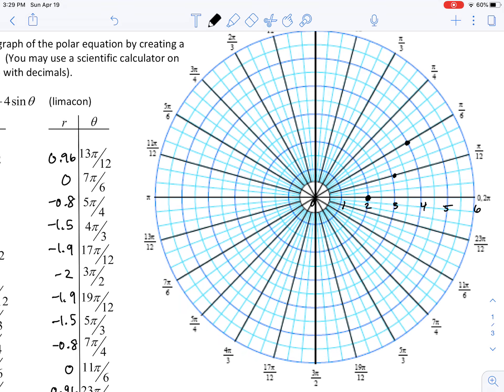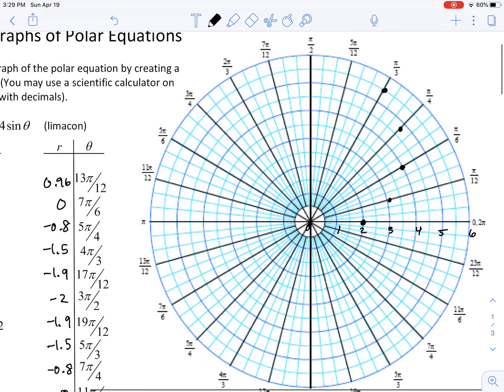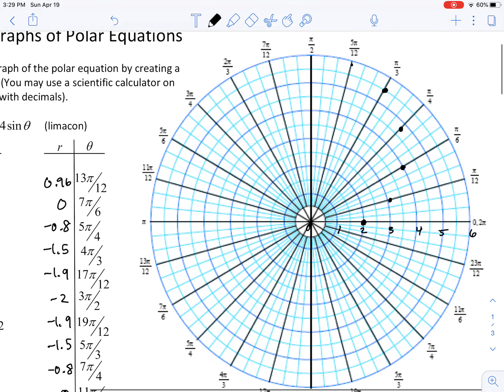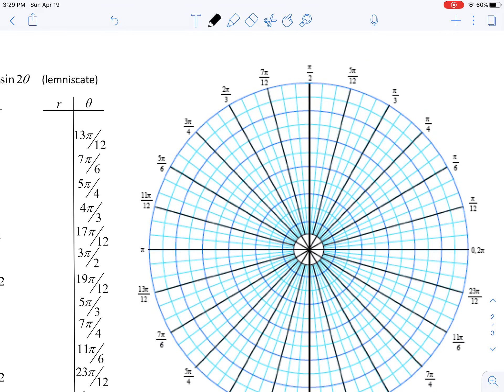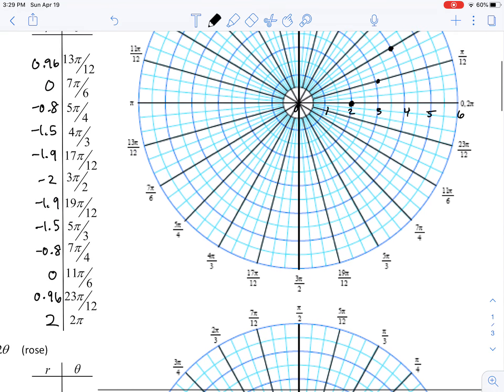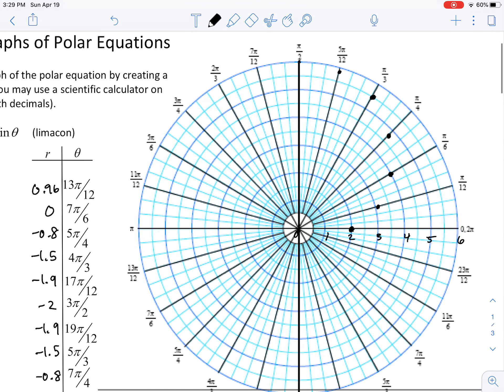When we get pi over six, our r value is four. Pi over four is going to give us 4.8, which is right around there. Pi over three gives us 5.5, which means we're going to jump right around there. Here, 5 pi over 12 is going to give us 5.9. So we're really darn close to six. And then right over here, we're going to get this value.